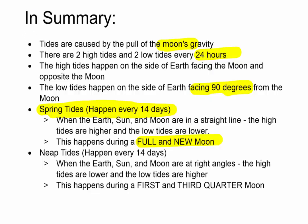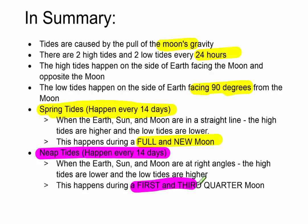Now the opposite of that situation are neap tides. Neap tides also happen every 14 days when we have a first and a third quarter moon. When the earth, sun and the moon are at right angles, then the high tides are the lowest and the low tides are the highest.